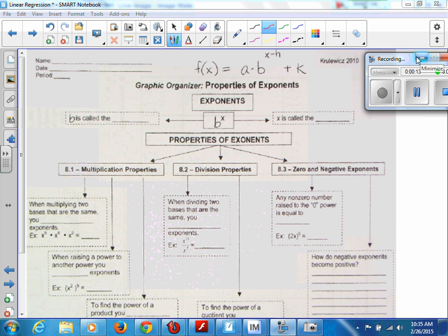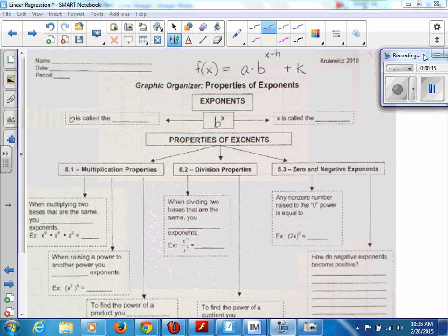So let's look at this graphic organizer really quickly. The graphic organizer shows us how to find the exponents and what are the properties of exponents. You're just going to follow along with me and fill in the blanks. The first blank says B is called the blank.